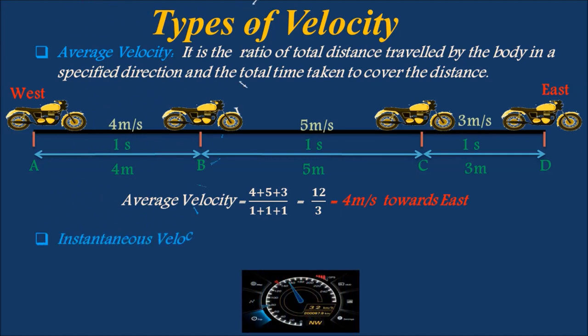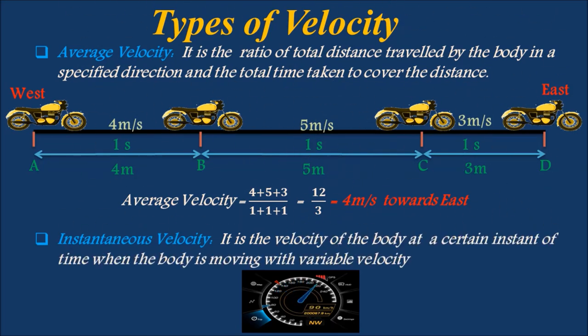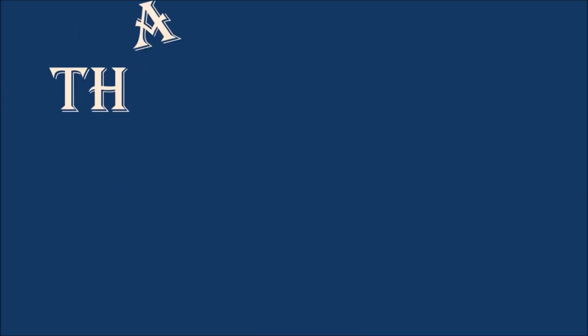Instantaneous velocity is the velocity of the body at a certain instant of time when the body is moving with variable velocity. Thank you for watching this video.